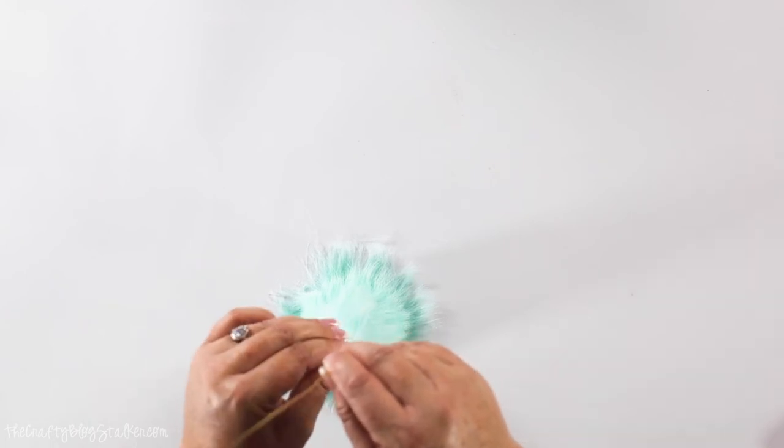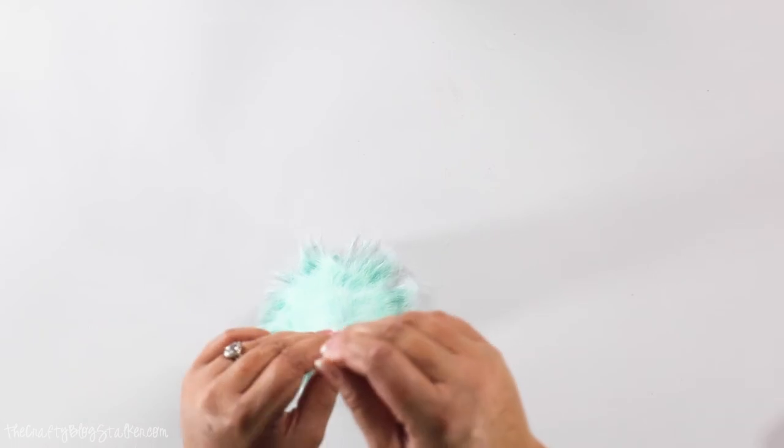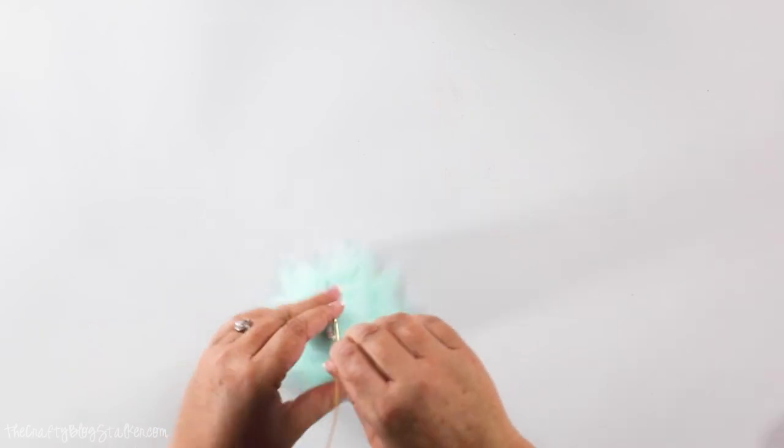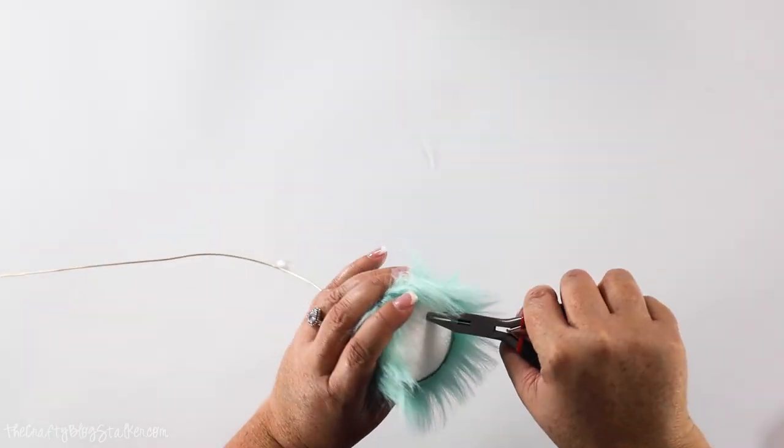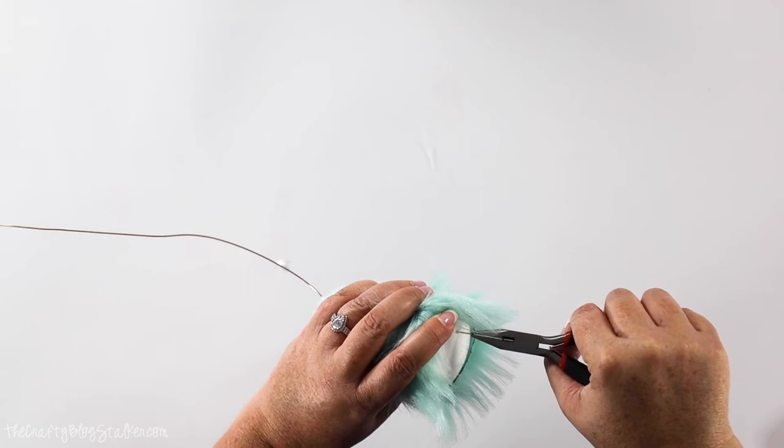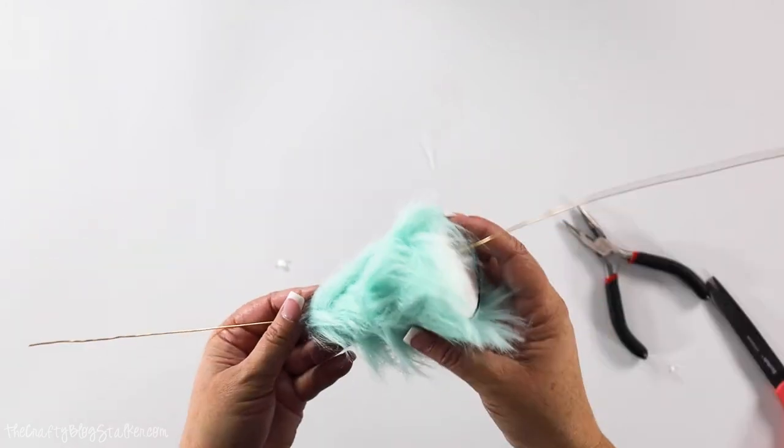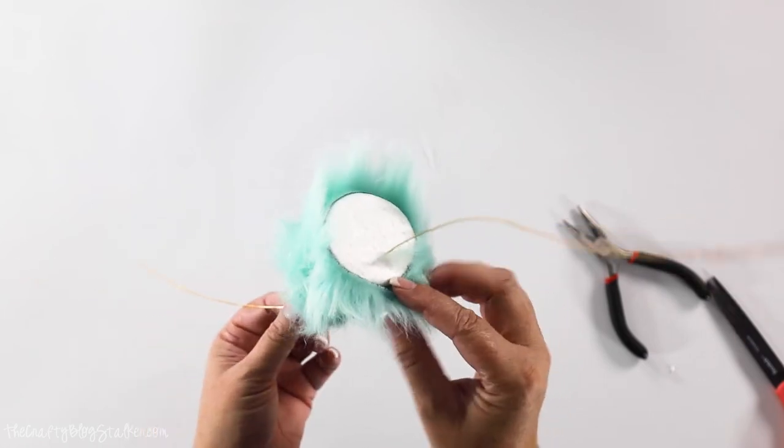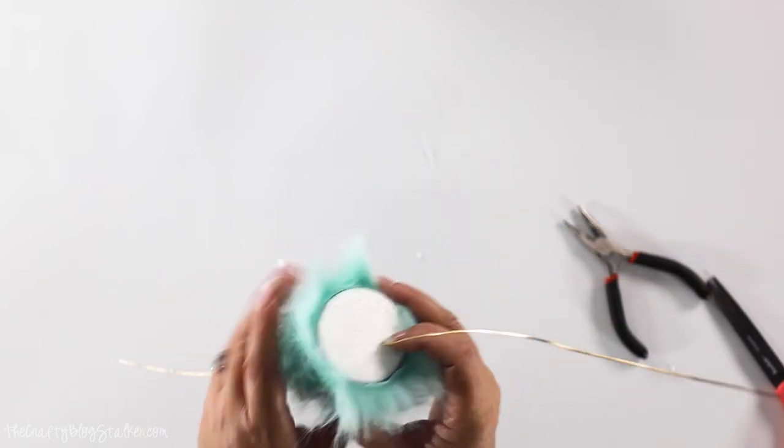We're just going to push that in. And not bend it. So we can see it's starting to come through. So I'm going to grab the pliers. And just pull it through. Now we've got the wire through our tree. It's not in the center, but that's okay. That's why we go from the top and not from the bottom.